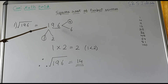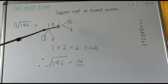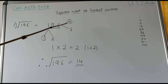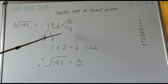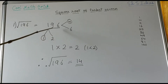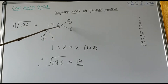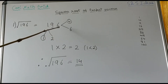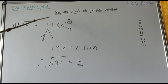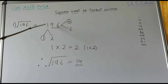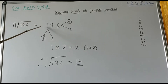First, let us write the number 196 and then group it into two parts. The first part will be 96 — that is the last two digits of the square number — and the remaining digits will be the second group, so here it is 1.